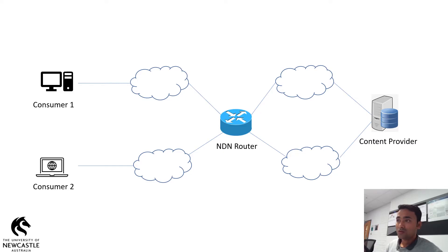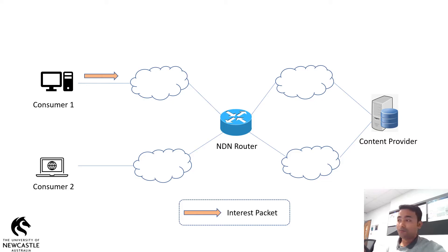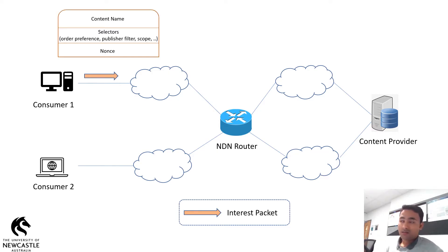Let us consider a simple NDN architecture having two consumers, one edge router, and one content provider. The content provider is the entity which generates contents or data. The consumers are the entities who want to access those contents. To access the contents, the consumer sends interest packets to the content provider. Suppose consumer one wants to access a content named XYZ — the consumer generates an interest packet and sends it to the edge router, which forwards the interest packet towards the content provider.